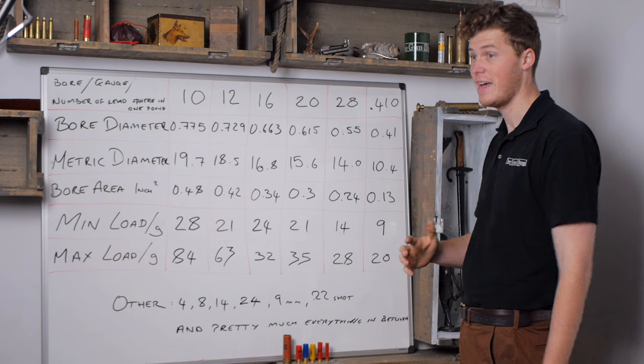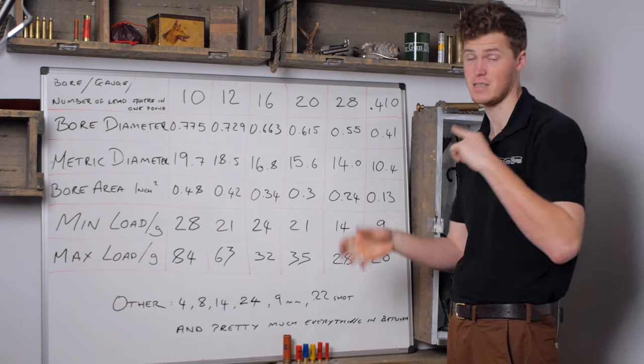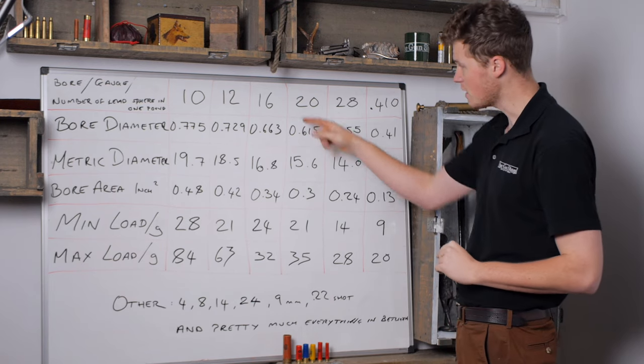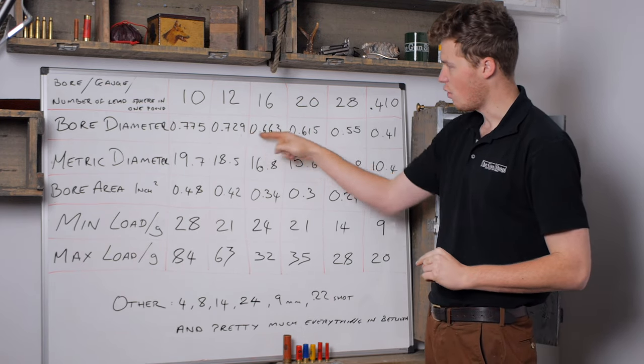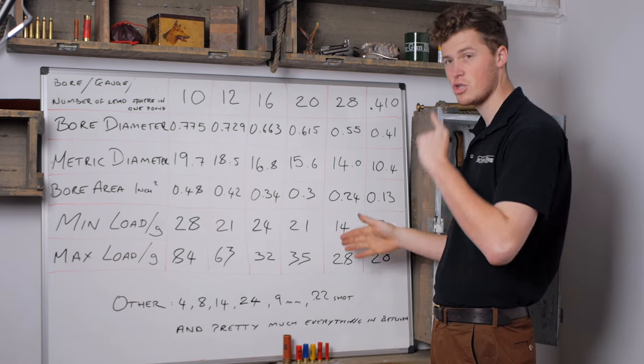As much as bore diameter, bore area matters very much for those of us who care about the physics and ballistics of a shotgun. As a bore gets bigger, although it doesn't look like a huge gap, it does get exponentially larger in surface area. This will allow your shot column to change.